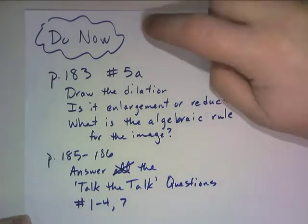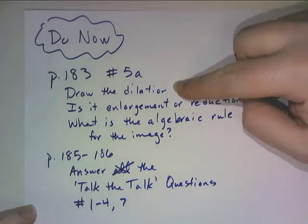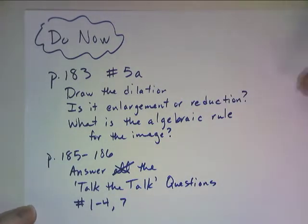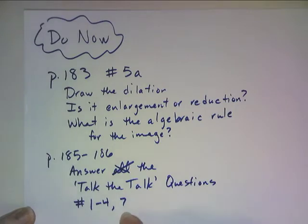These are the problems I want you to do now. On page 183, do problem number 5a, which is where it asks you to draw the dilation. And then tell me off to the side, is that creating an enlargement or reduction? And what is the algebraic rule that would give you that same image? Then go to page 185 and 186. And instead of answering all the talk-to-talk questions, you can leave out questions 5 and 6. Do 1 through 4 and number 7. Pause now.